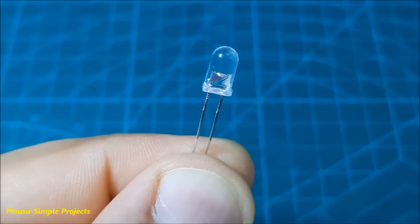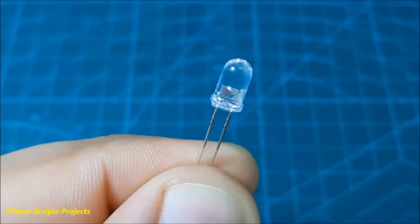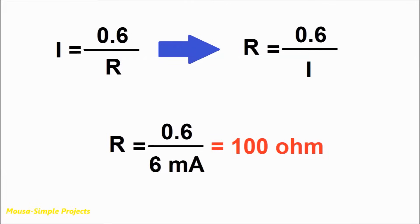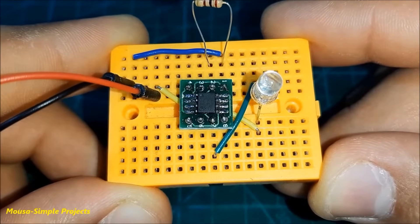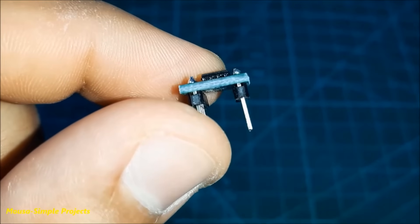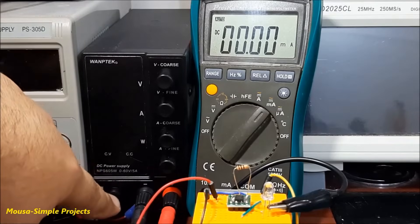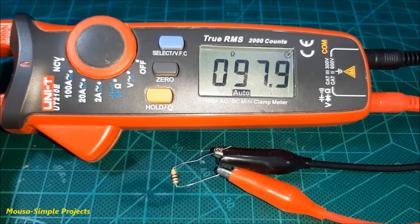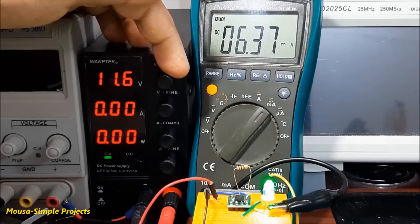Let's take an example. Here I have a small LED and I want to drive it with 6mA of current. According to this formula, the value of this resistor must be 100 ohm. I hooked up this circuit on the breadboard as shown — I used an SMD to through-hole adapter for the IC. As you can see the circuit is working well. The current is slightly more than 6mA due to resistor tolerance, but it stays constant even when changing the input voltage.